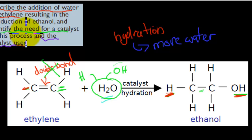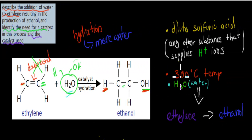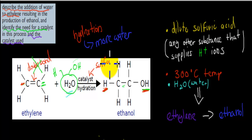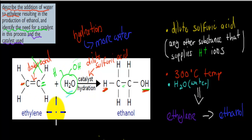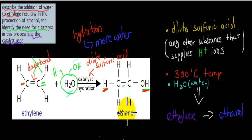We also have to identify the need for a catalyst. In this case the catalyst is dilute sulfuric acid. We need to know the name, but we also need to know why we have to use it. Without a catalyst, if we just have ethylene and water mixed together, nothing is going to happen — they won't react. But if we add this catalyst, which speeds up chemical reactions, then the reaction will happen much faster.